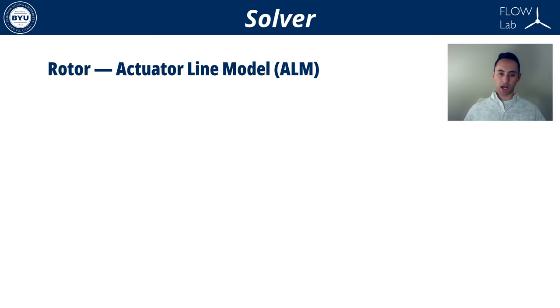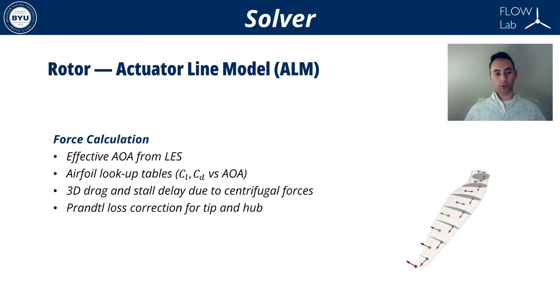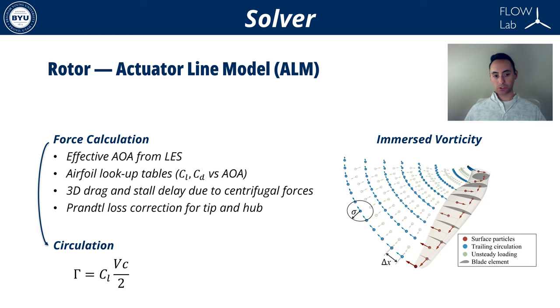In our solver, rotors are represented through an actuator line model, which is a common approach in LES. The force along each blade is computed through blade elements. The force distribution is then converted into a circulation distribution. This circulation is then converted into an equivalent vorticity that is embedded on the blade surface, which is shed at the trailing edge.